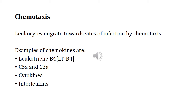Now what directs this movement? The movement is guided by a process called chemotaxis. Some chemicals are released by bacteria which have intruded, or by damaged cells, and in response to these chemicals the leukocytes migrate. Because this movement is directed by the release of chemicals it is called chemotaxis. Examples of chemicals released include leukotriene B4, C5a, C3a, cytokines, and interleukins.